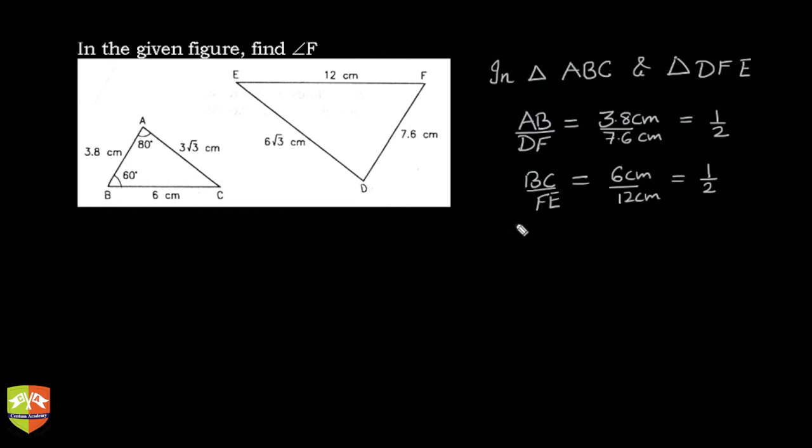Let's do CA upon ED. CA upon ED, and how much is that? CA is, as you can see in the figure here, 3√3 cm divided by 6√3 cm, and again this is 1 upon 2. So what do we conclude?